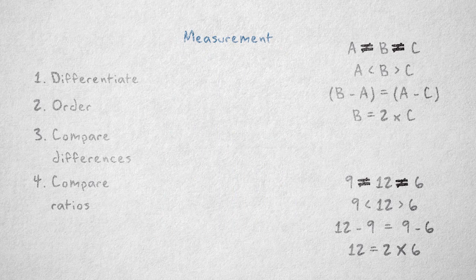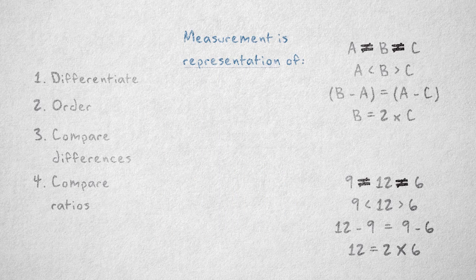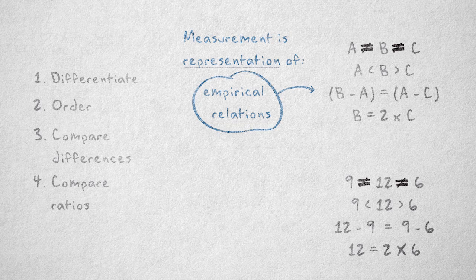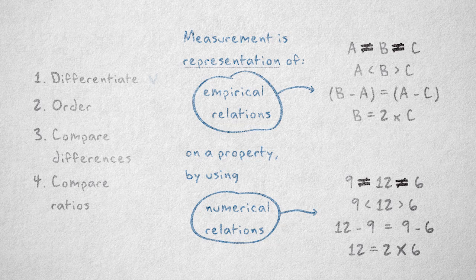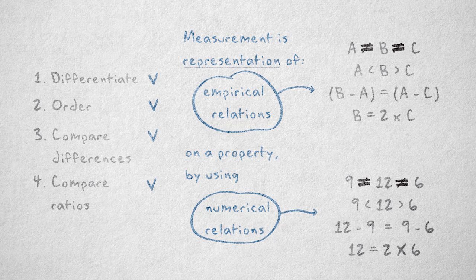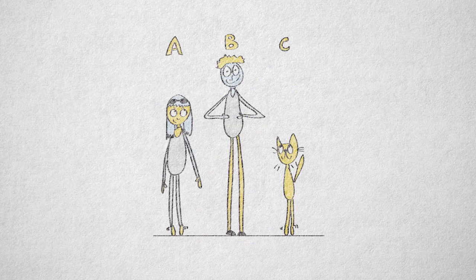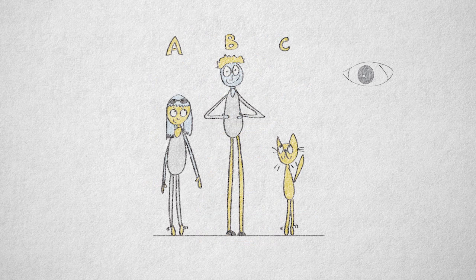So you can see that measurement is the representation of empirical relations between objects or persons on a certain property by using the numerical relations between numbers. We can differentiate lengths, order them, compare differences, and ratios of body length. We determine these empirical relations by looking and using some cardboard.